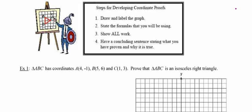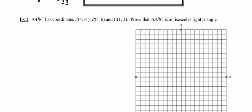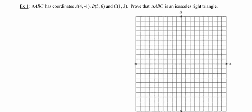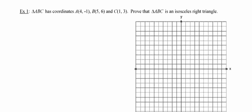In the first and only example for this video they're giving us a triangle with the given coordinates and they're asking us to prove that this triangle is an isosceles right triangle.